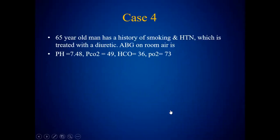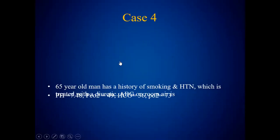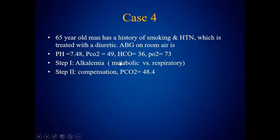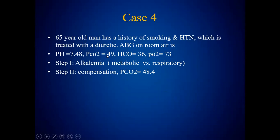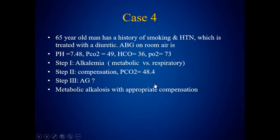Another case: a 65-year-old man with a history of smoking and hypertension, treated with diuretics. ABG on room air shows pH of 7.48 — whenever pH is more than 7.45, it's alkalosis, so it's alkalemia. pCO2 of 49 does not help alkalemia — that's acidosis. But bicarbonate of 36 is alkalosis, since anything more than 25 is alkalemia. So there is metabolic alkalosis. Calculating compensation, pCO2 should be 48 — and 49 vs. 48 is within the plus-or-minus 2 range, so it's appropriate compensation. The anion gap cannot be calculated as values are not given. So it's metabolic alkalosis with appropriate compensation — a simple disorder. Diuretics, as discussed before, could cause metabolic alkalosis.